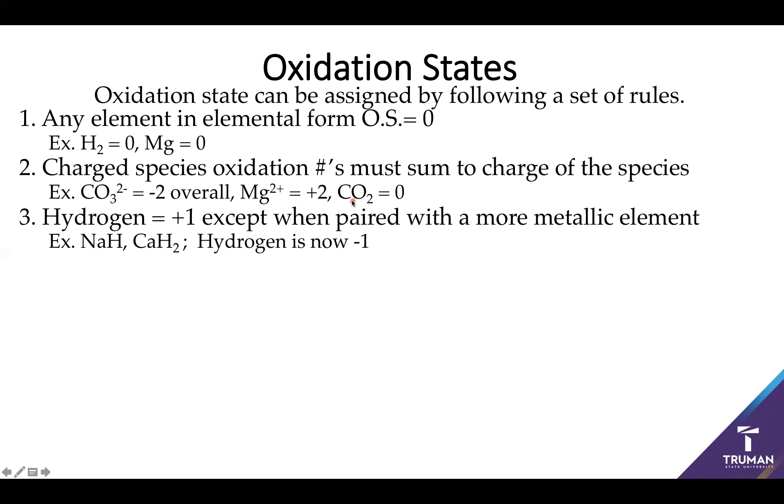Now, this means that if I know that the net has to be a given number, I need rules to figure out who's likely to have more and who's likely to have less. So a good place to start is hydrogen. Hydrogen almost always loses an electron to pretty much everybody else. So in general, hydrogen will be plus one. Now, the exception here is when it's paired with a more metallic element.